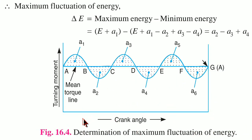This ordinate represents crank angle and this ordinate represents turning moment. The maximum fluctuation of energy, ΔE, is equal to maximum energy minus minimum energy. That means (E plus A1) minus (E plus A1 minus A2 plus A3 minus A4), which after calculating gives ΔE = A2 minus A3 plus A4. This is the maximum fluctuation of energy.